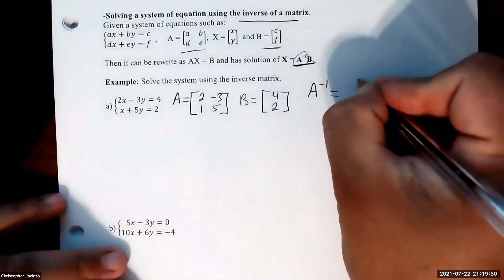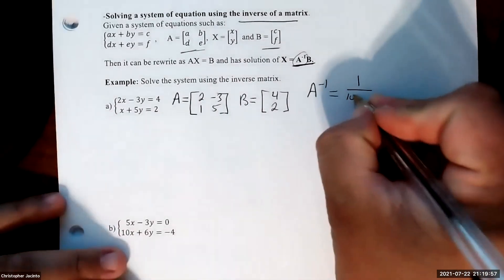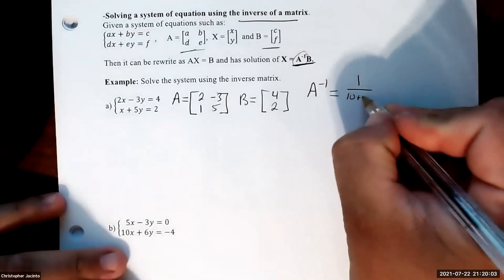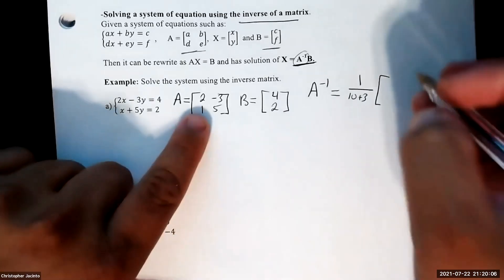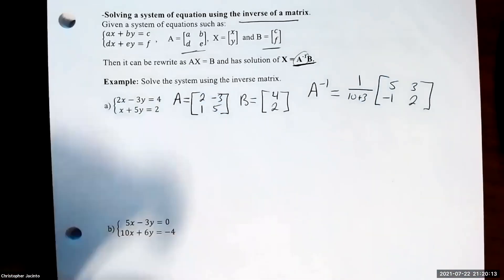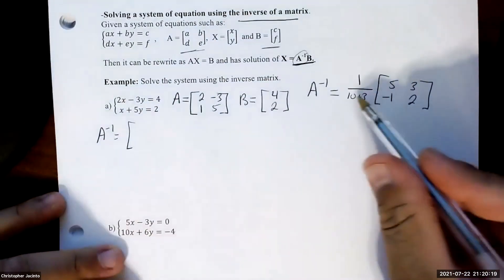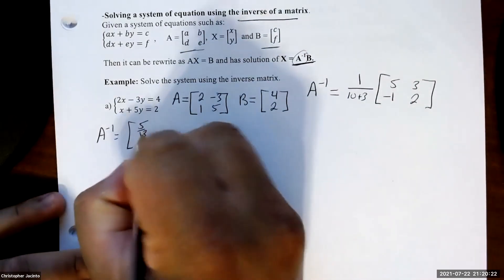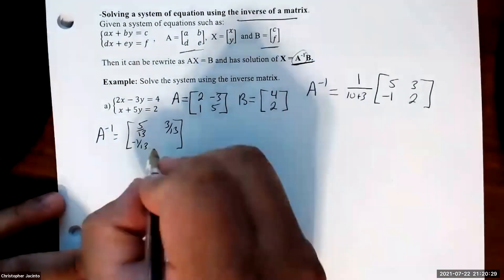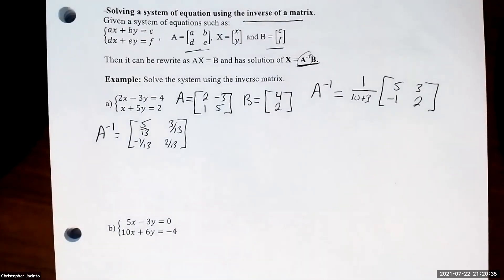Let's first find the inverse of A. That's finding first 1 over the determinant. So 2 times 5 is 10 minus 1 times negative 3 is positive 3, so that's 13. The inverse is going to flip them, so 5, and then change the signs: negative 1 and positive 3. So A inverse is 5 over 13, 3 over 13, negative 1 over 13, and 2 over 13.